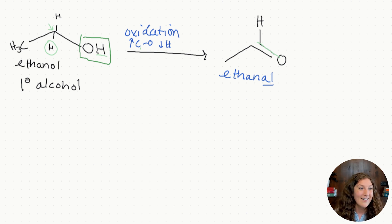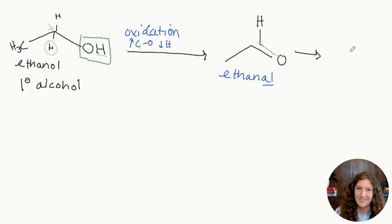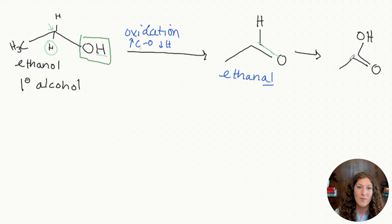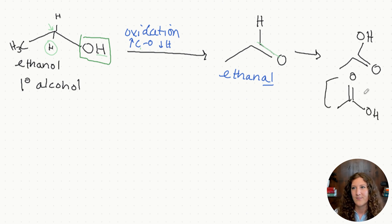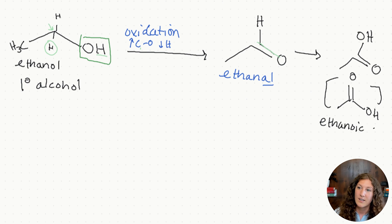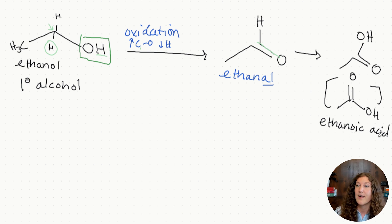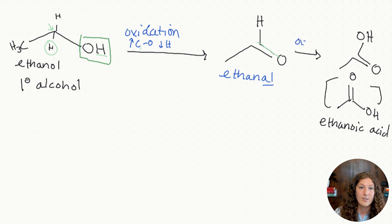We could go even further and add more oxygen bonds to this carbon. What would we get? If you said a carboxylic acid, you're absolutely correct. We did get another oxygen on this carbon — we now have no more hydrogens, but we added an additional bond to oxygen. This is ethanoic acid — we're not changing our base number of carbons, just changing the functional groups. We've gone from ethanol to ethanoic acid, with '-oic acid' referring to a carboxylic acid. Both of these steps are oxidation reactions; one just goes further than the other.